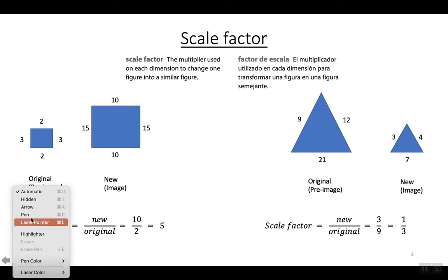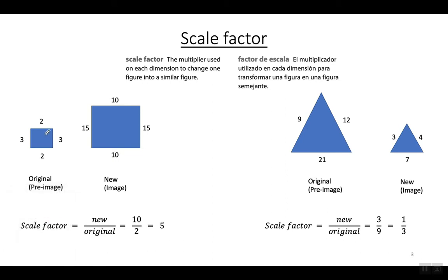Notice that when the shape goes from small to bigger, the scale factor has to be a number bigger than 1. To make the shape bigger, you multiply by a number bigger than 1. When the pre-image gets smaller, you multiply by a number between 0 and 1 — in other words, a fraction or a decimal less than 1. So if it's getting smaller, you multiply by a number less than 1 but greater than 0. The scale factor is never negative.